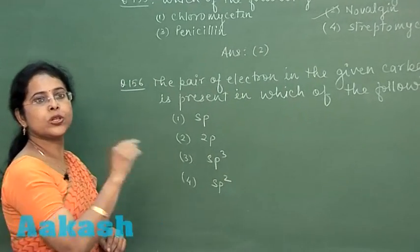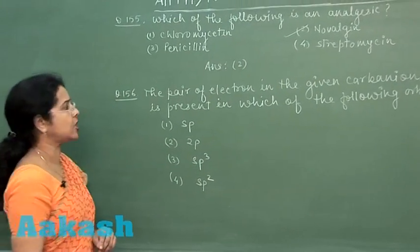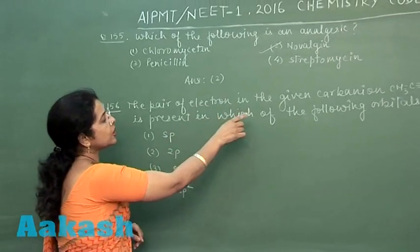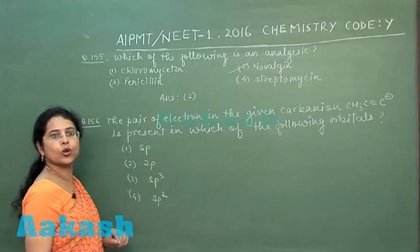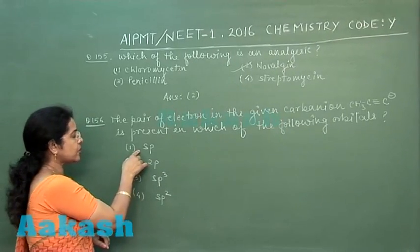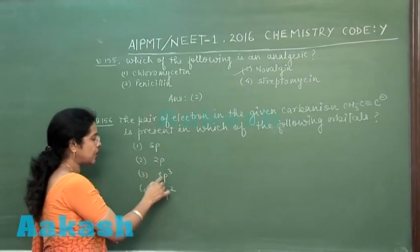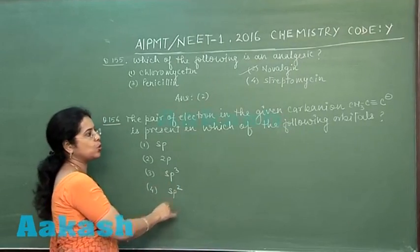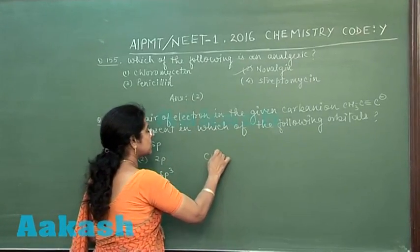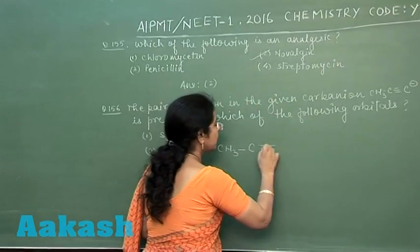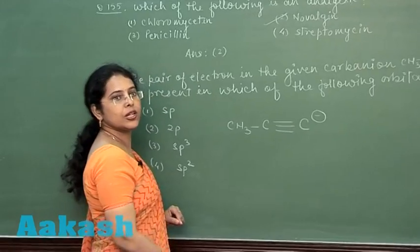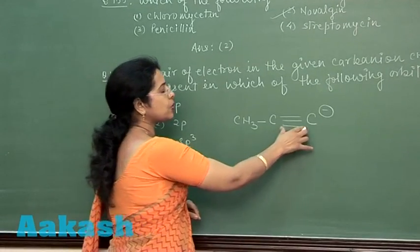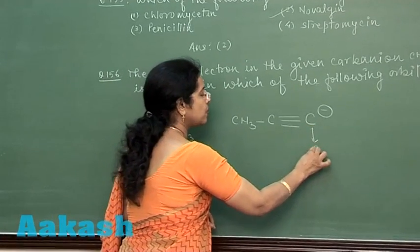The next question of today's paper, question number 156: the pair of electrons in the given carbon ion is present in which of the following orbitals? The options given are sp, 2p, sp3, and sp2. Here the carbon ion mentioned is CH3-C≡C- where this carbon is negatively charged. It is triple bonded carbon, so the hybrid state of this carbon is sp.